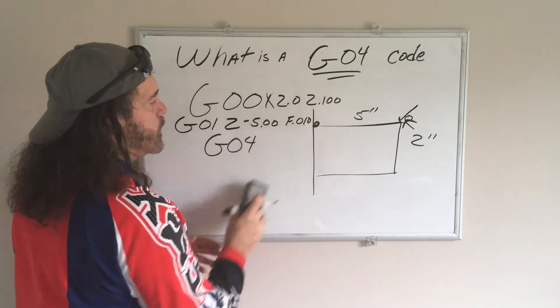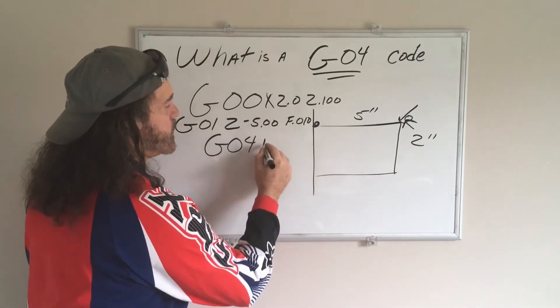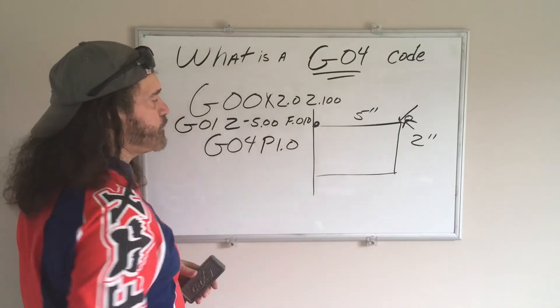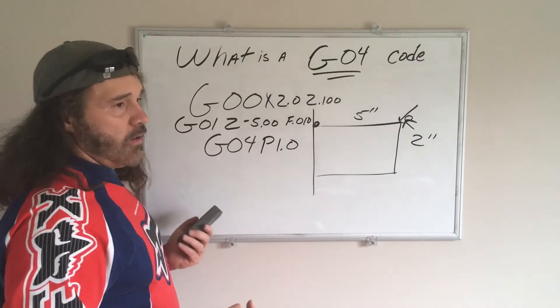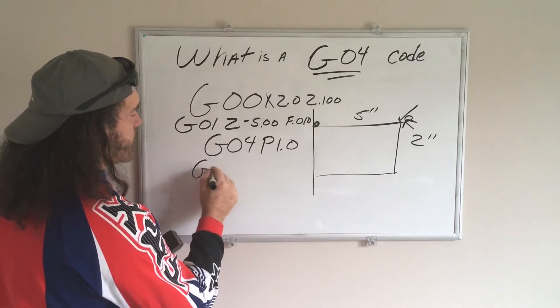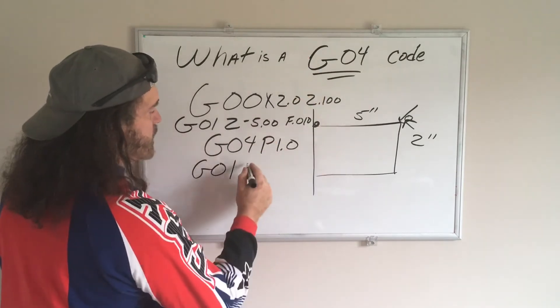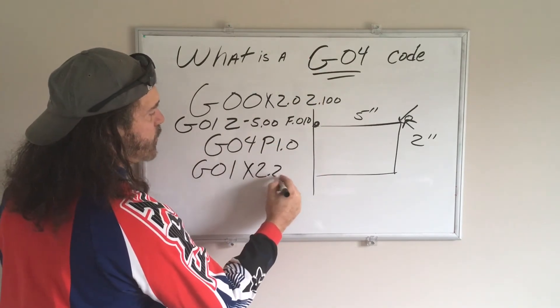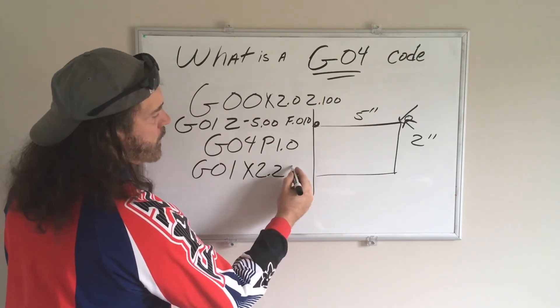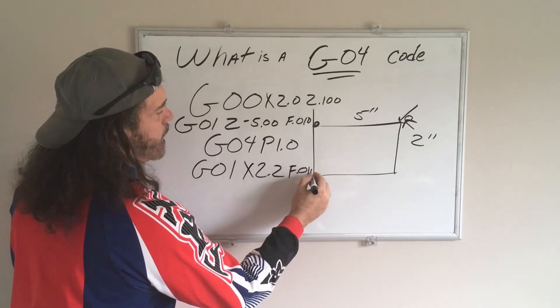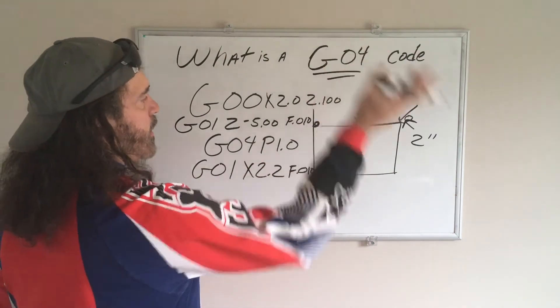Or you can just sit there for one second, say P1.0, and from there, G01, we'll just feed off the part, say X 2.2, F10.